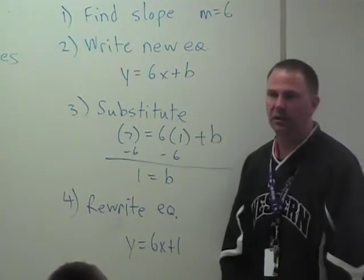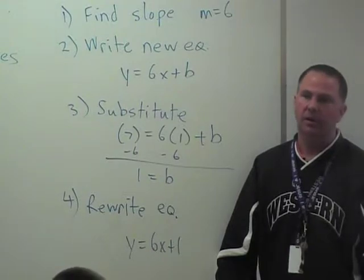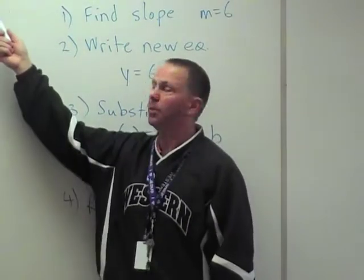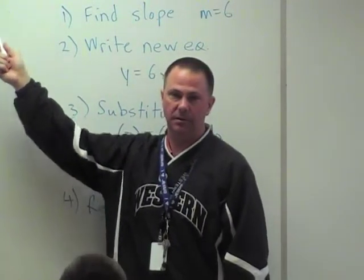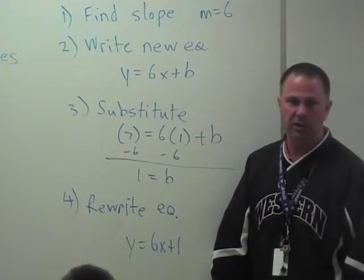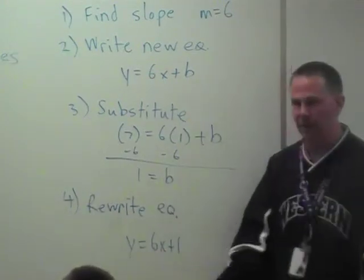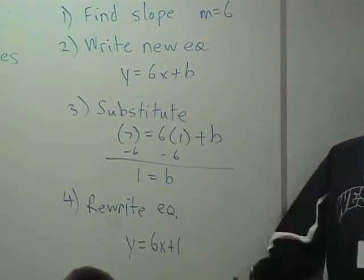All right, so these are the steps you need in doing this assignment. You've got to find the slope. Whether you're finding a parallel line or a perpendicular line, you still have to find the slope of the given equation. You're using that to help you find the intercept and then write the new equation. Everybody okay with this?